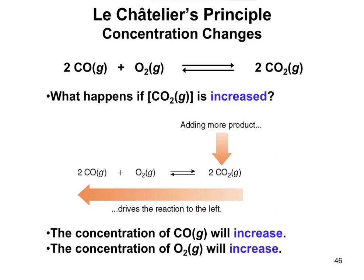Here's another example using the same reaction. What happens if CO₂ is increased? If you add more CO₂, the system wants to get rid of it. The way it gets rid of it is by breaking CO₂ down and forming more oxygen and more carbon monoxide. So when you increase CO₂, levels of O₂ go up and levels of carbon monoxide go up, because the equilibrium shifts to the left — it drives the reaction to the left.